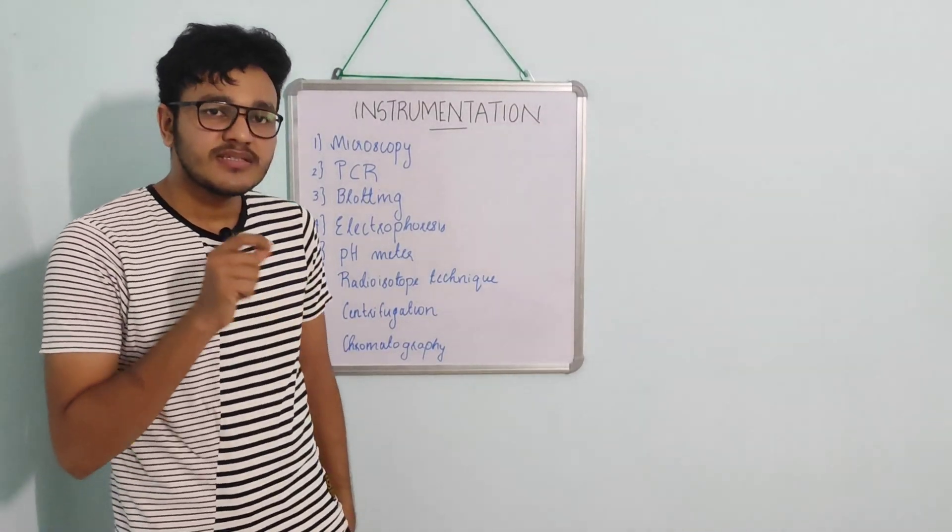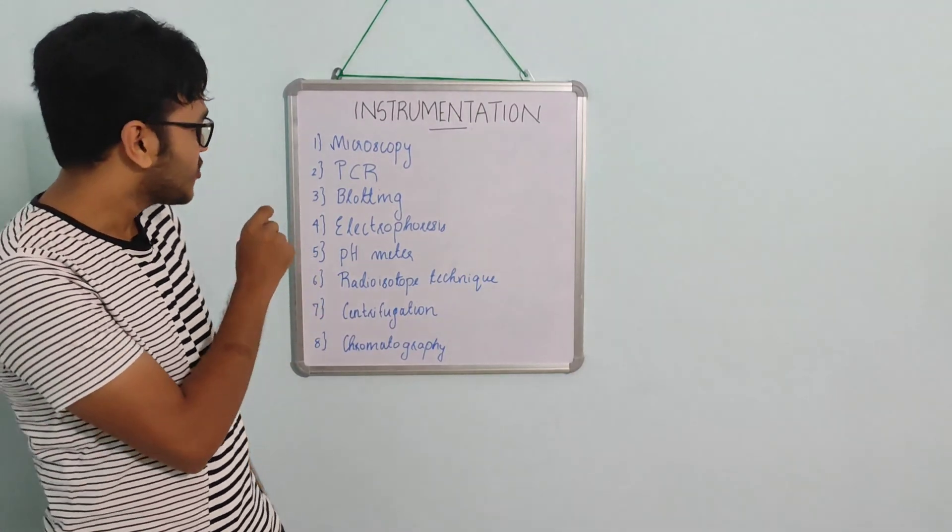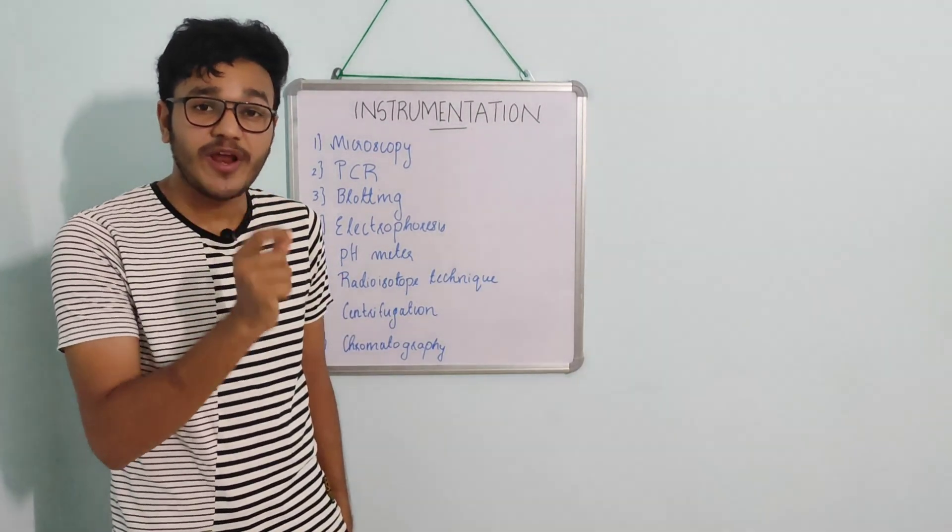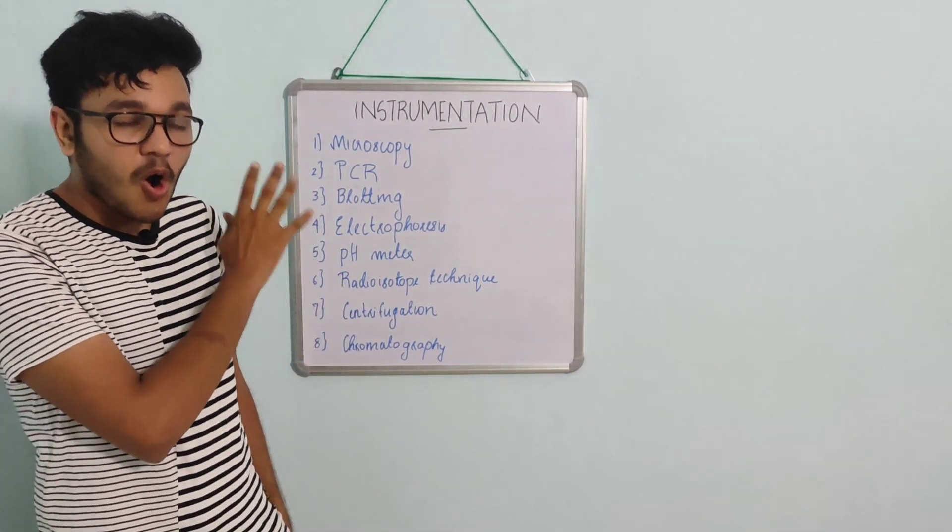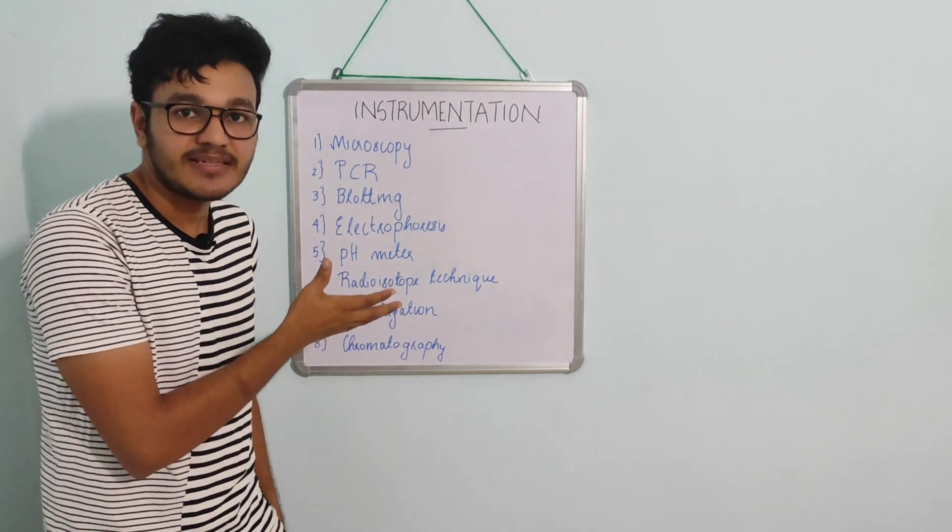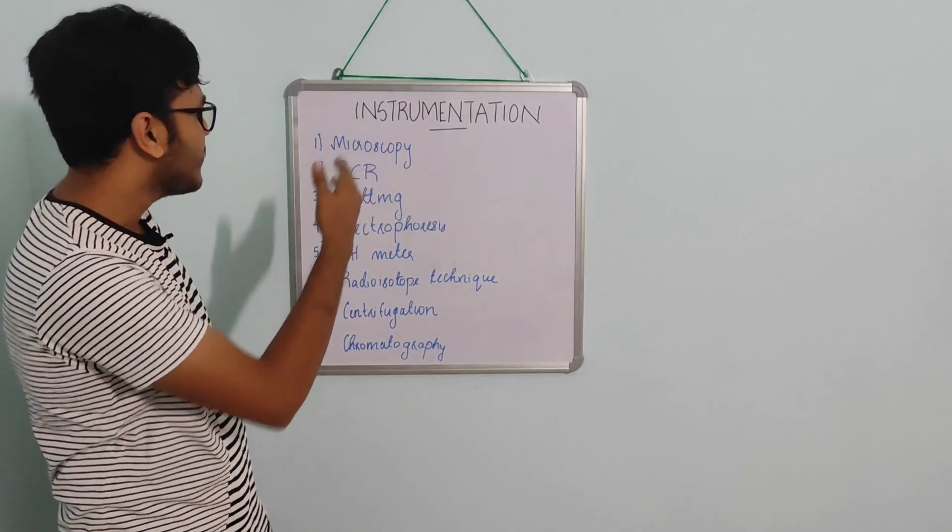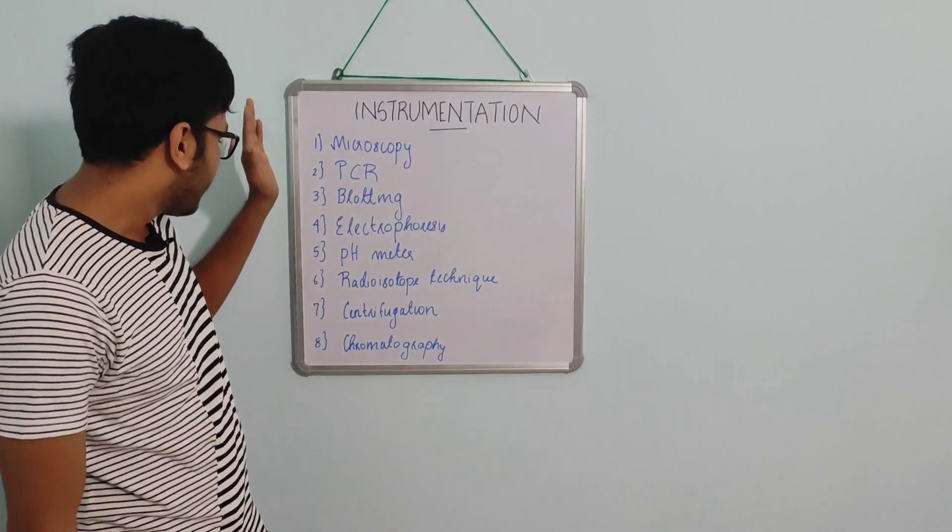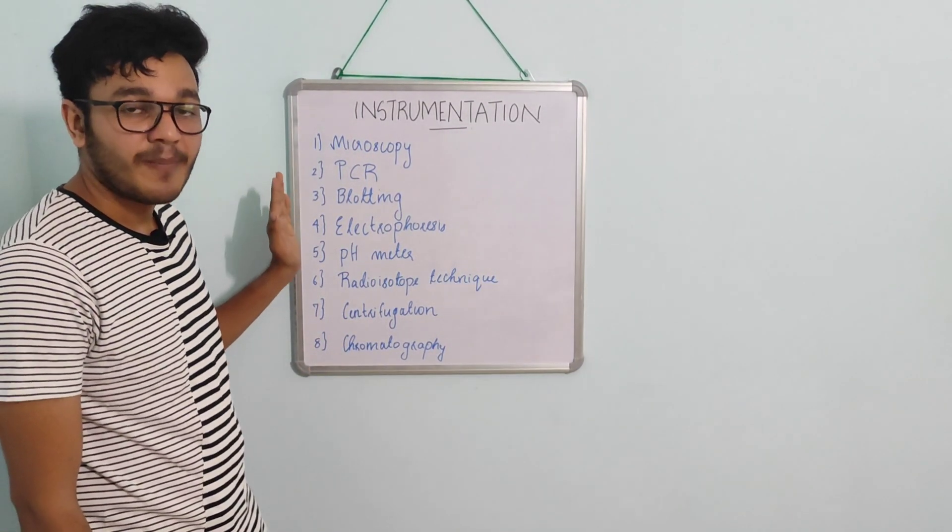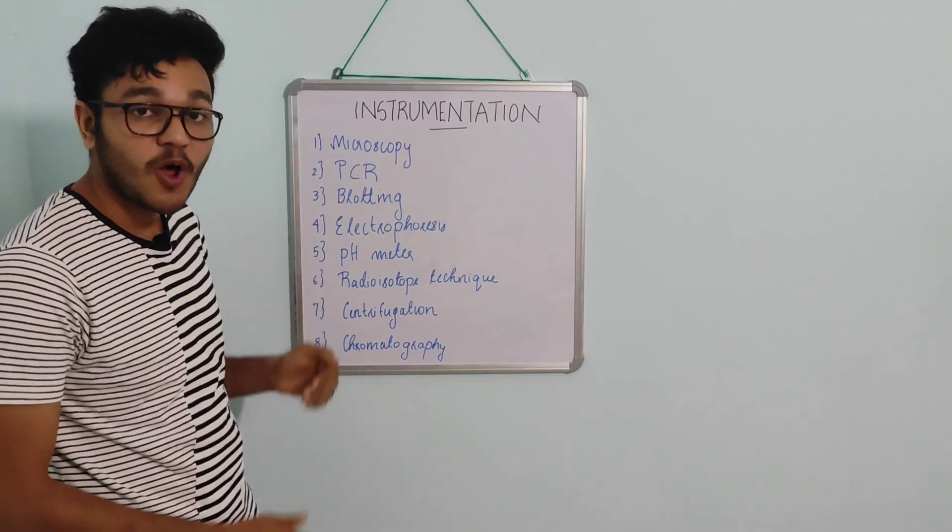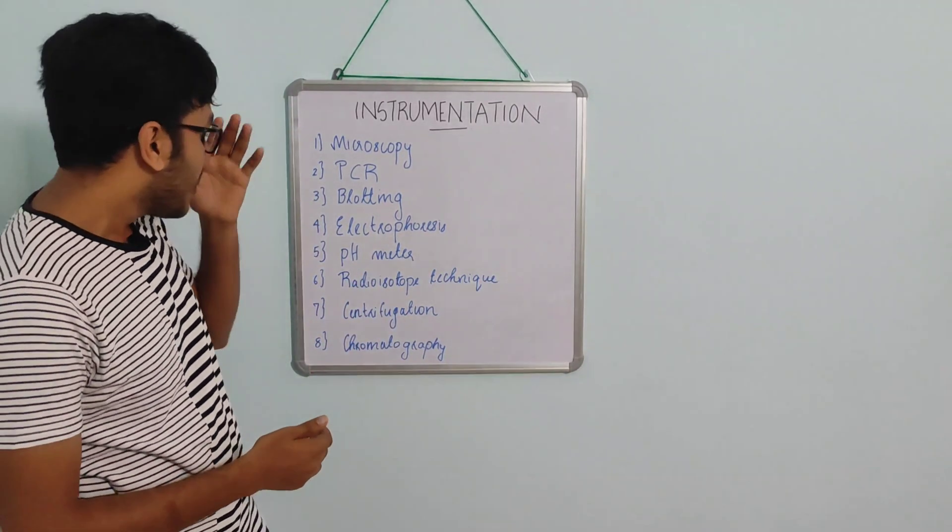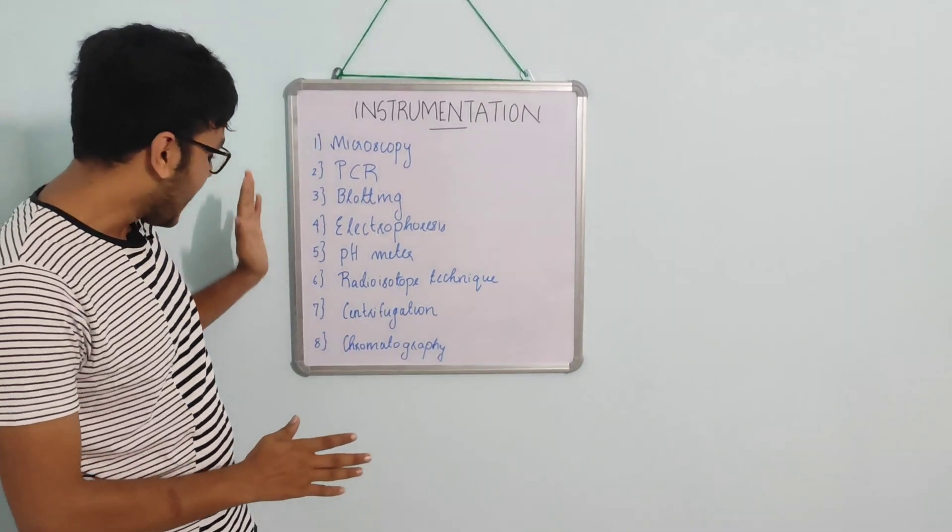As we have discussed the CUCT syllabus, we know that instrumentation or techniques is a very important part, because for all departments with life sciences, the common topic for them is instrumentation. Under instrumentation, we are focusing on eight major topics with further subtopics. We'll discuss those also, but first, let's briefly discuss the eight major topics.